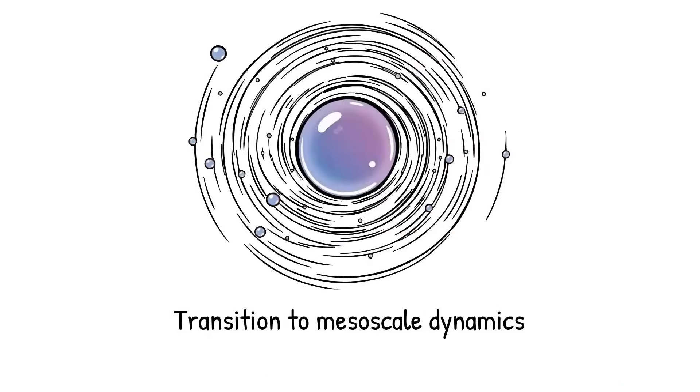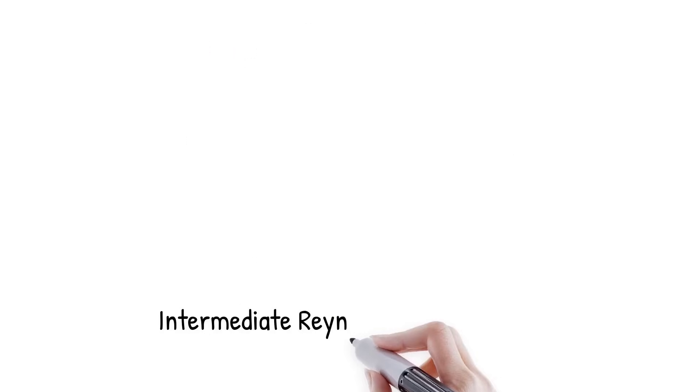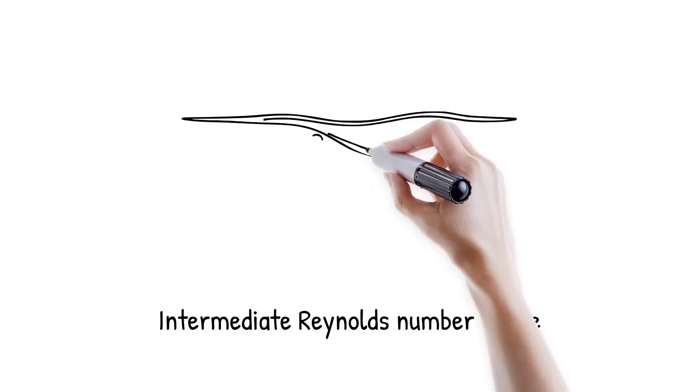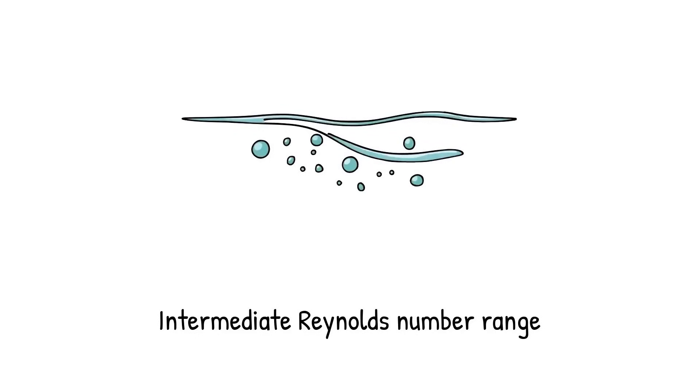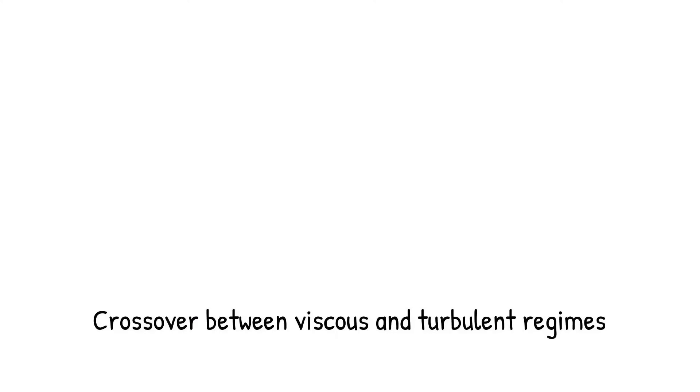Particles no longer maintain perfect reversibility and structures become more dynamic. The balance of forces introduces oscillations, precession, and irregular flows. The system enters a landscape of instability and change.